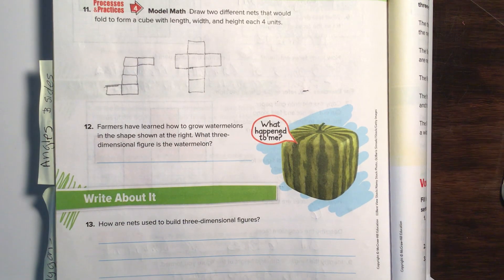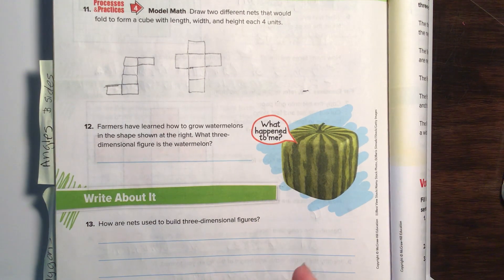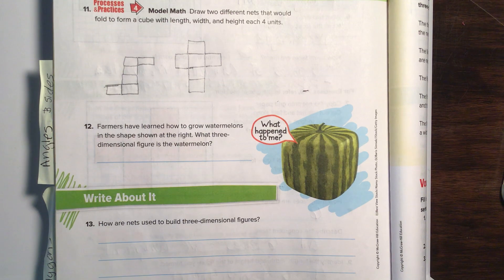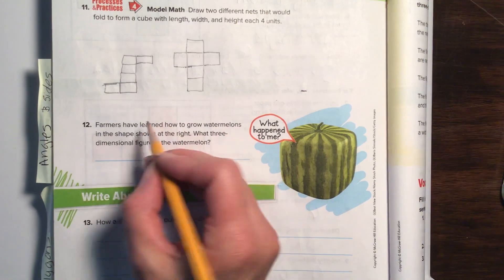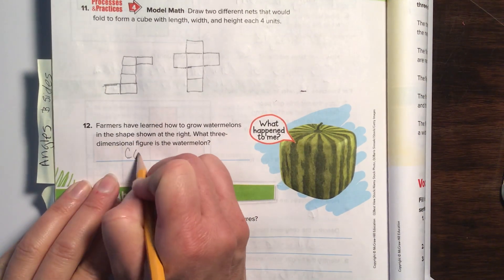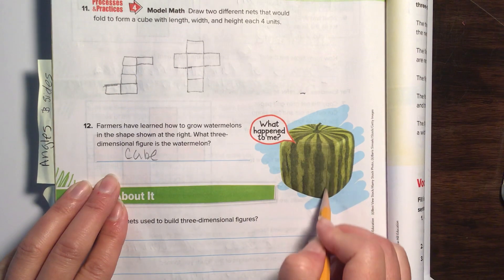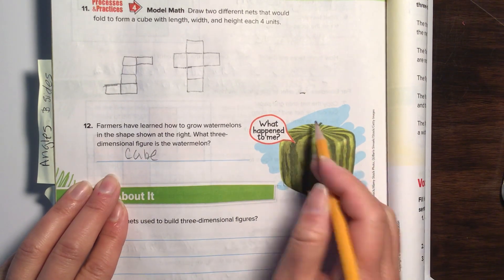Number 12. Farmers have learned how to grow watermelons in this shape shown to the right. And the reason how they do that is they actually put it in like an Easter egg mold. It's kind of like a little two-piece plastic mold, but it's shaped like a square. And they put the watermelon in that. And as the watermelon grows, it fills the shape. And that's how they can get square watermelons. Pretty crazy, right? What three-dimensional figure is shown? And I just gave you the answer several times, but we're going to call it a cube. Because a square would just be this face part. And the cube is three-dimensional.